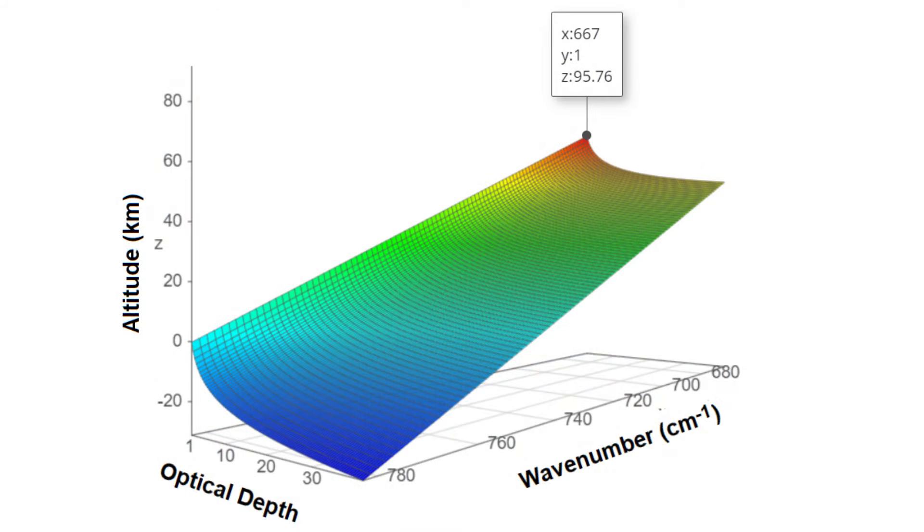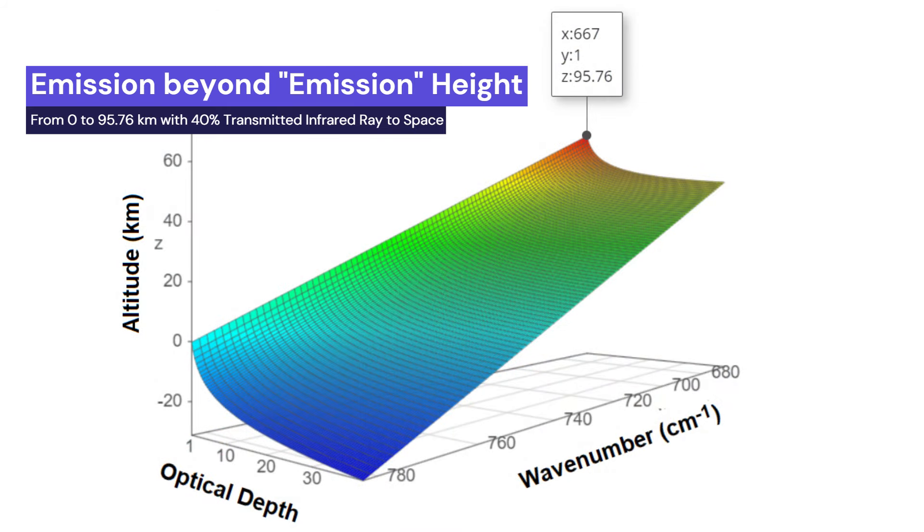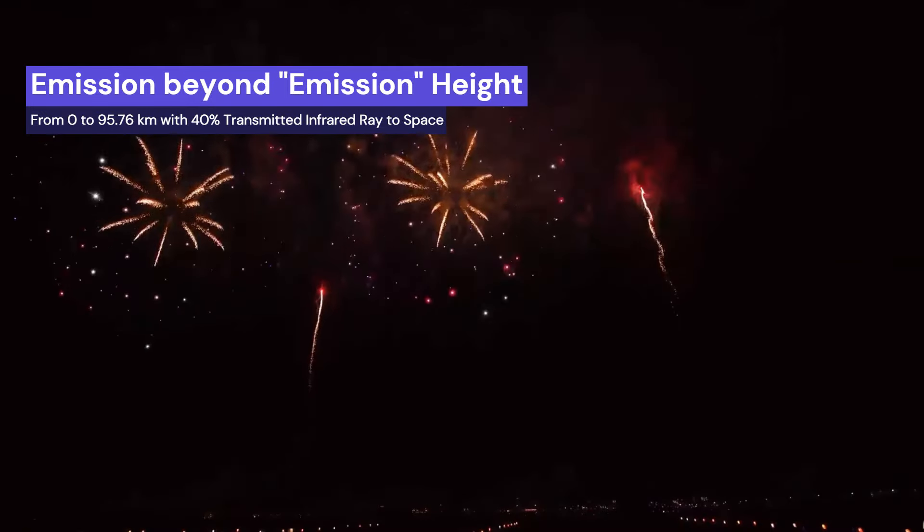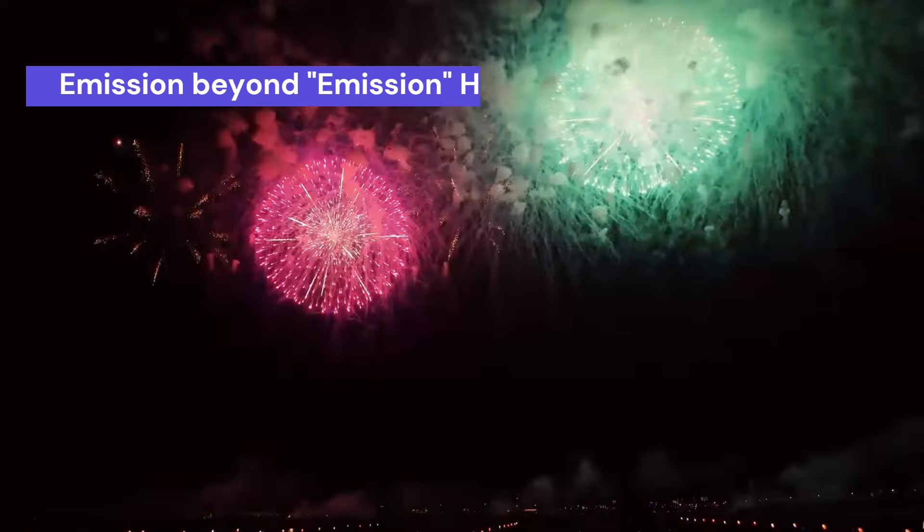But what does that imply? It implies that 40% of the emitted infrared rays by any CO2 molecules located between altitude 0 to 96 kilometers can reach to outer space, rather than just from CO2 molecules at or around the highest altitude. So apparently this sounds quite different from those priests and the believers who passionately advocated emission altitude or emission height or emission level.